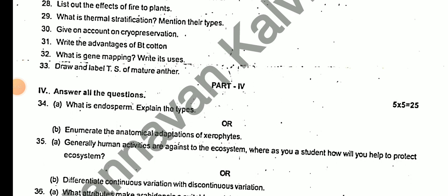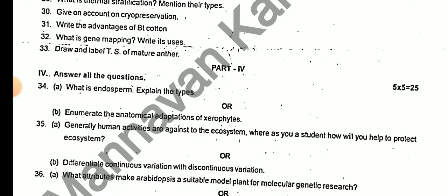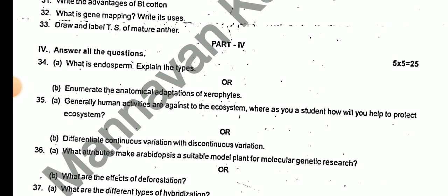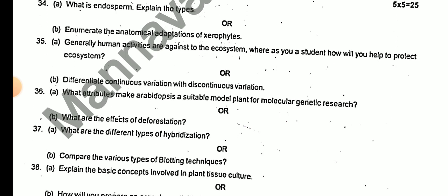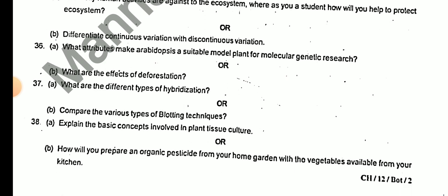For the 5-mark questions (5 x 25): What is endosperm? Explain the types. Enumerate the anatomical adaptations of xerophytes. Generally human activities are against the ecosystem — as a student, how will you protect the ecosystem? Difference between continuous and discontinuous variation. What attributes make Arabidopsis a suitable model for molecular genetic research? What are the effects of deforestation? What are the different types of hybridization?